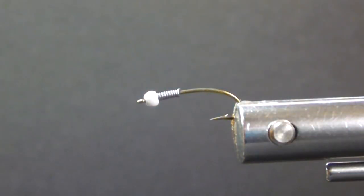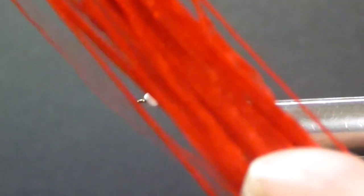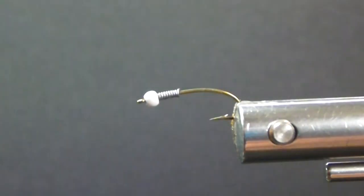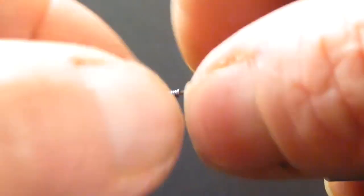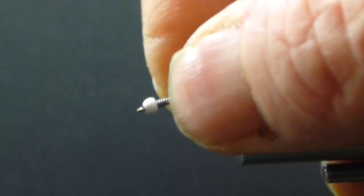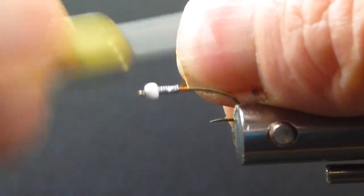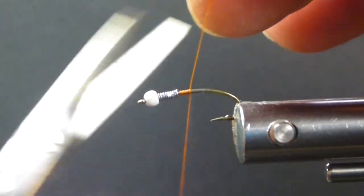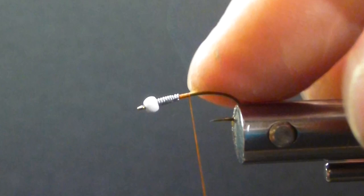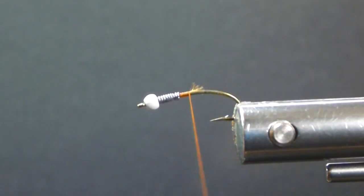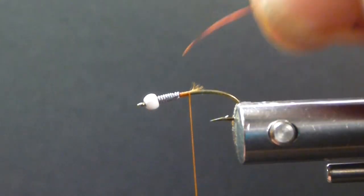Also, one of my materials I forgot to tell you about is my color. I'm going to use some red stretch floss. I like the stretch floss for the bodies in a lot of my Chronimids. And you can wrap it down super tight. So I'll get my thread started in behind the lead here. I've put about seven turns or so of that. I've got the lead wire on there.